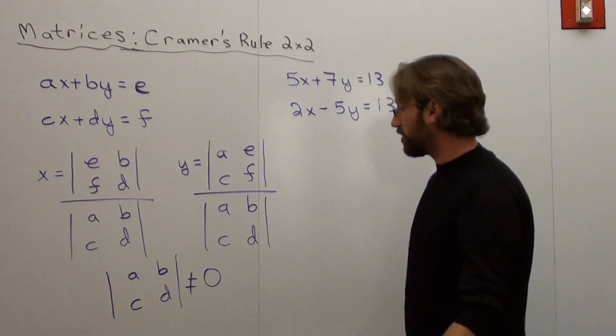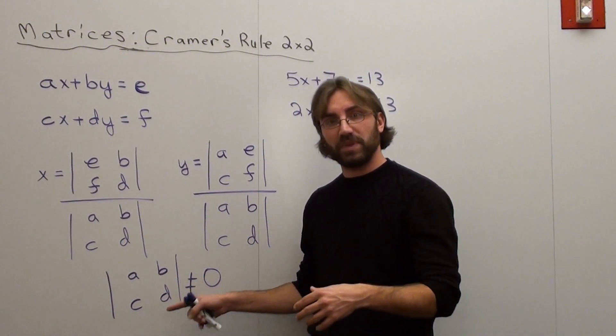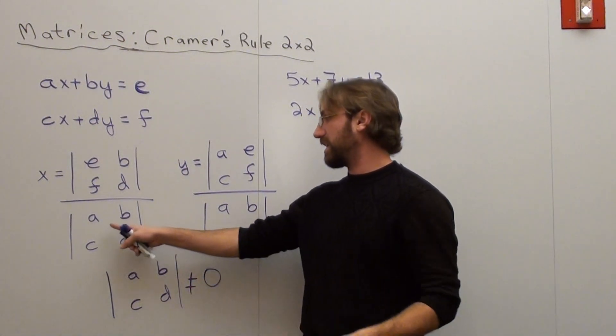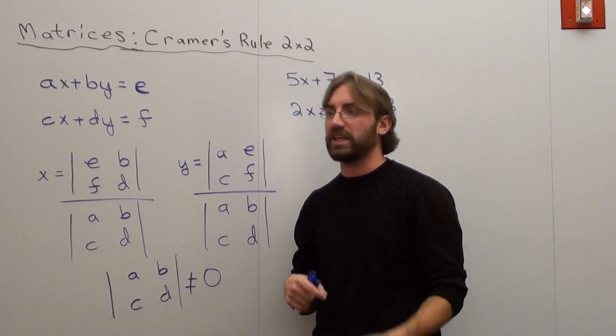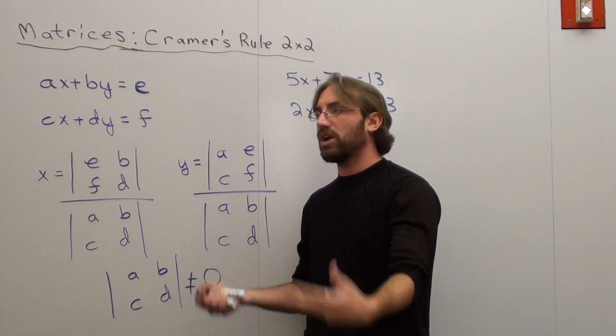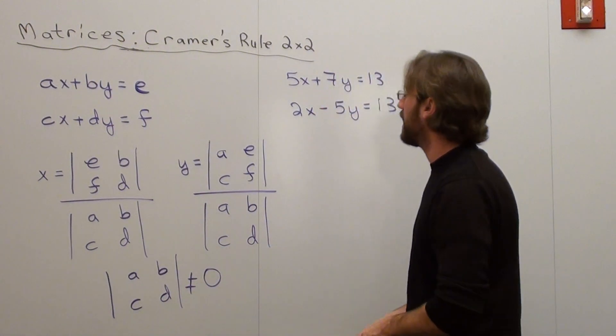There is one stipulation though. The determinant of a, b, c, d cannot be equal to zero, because if it is, it means that zero is in the denominator. You can't divide by zero. It's undefined. Cramer's rule doesn't work in that case.